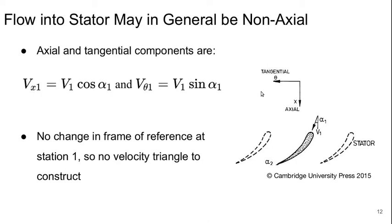Let's move through a generic turbine stage to help us build these ideas. In general, the flow entering the stator — which is the first blade row in a turbine — may not be axial; it could have some swirl from something upstream. The tangential and axial components are given by the velocity magnitude and the flow angles. There's no frame of reference change involved at station 1 upstream of the stator, so there's not really a velocity triangle to construct — the velocity just is what it is.